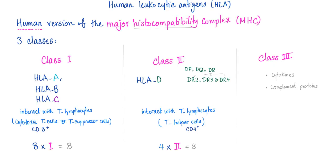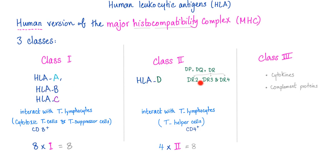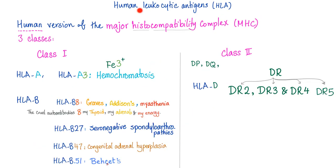We then started talking about human leukocytic antigens — the human version of the major histocompatibility complex. We've explained class 1, 2, and 3. Class 1 includes HLA-A, B, and C. Class 2 includes the D antigens. We talked about B27 in the previous video; today we'll talk about DR2, DR3, and DR4.